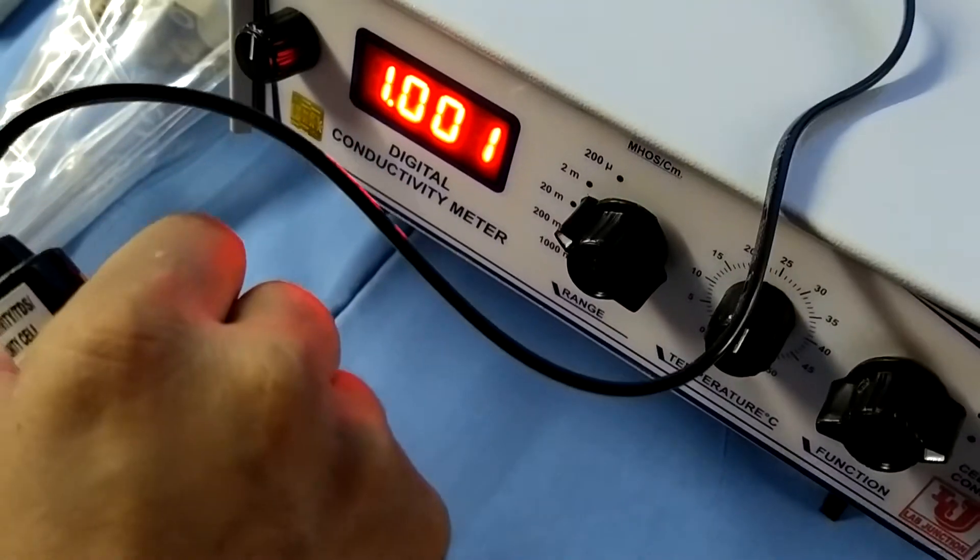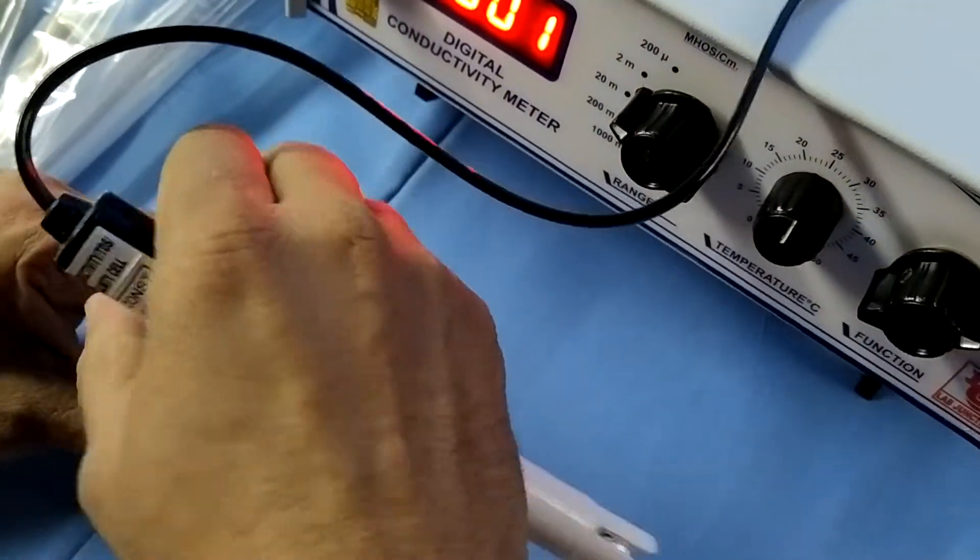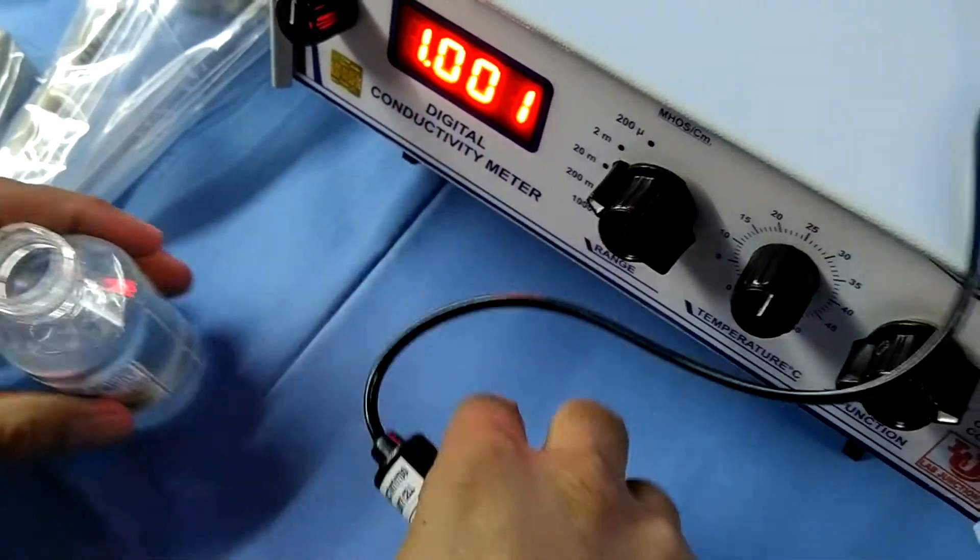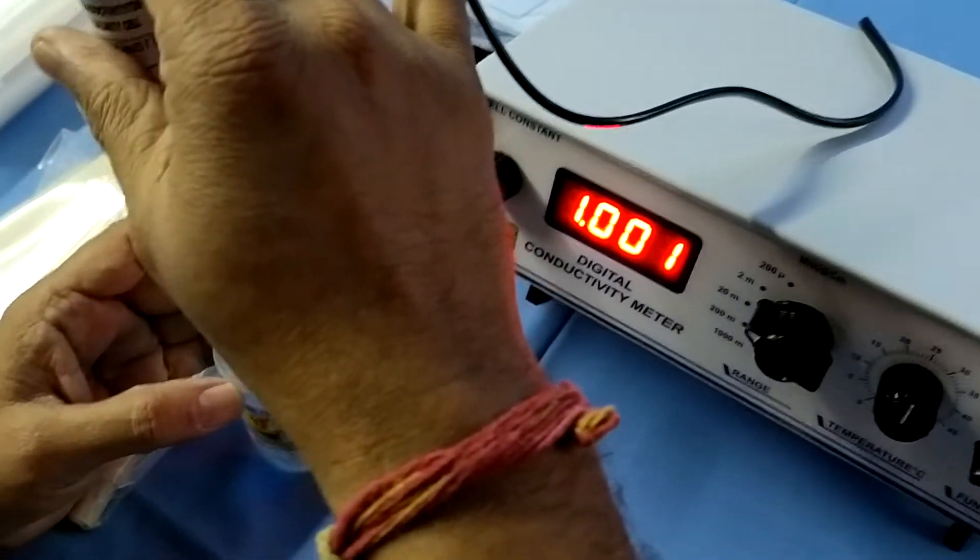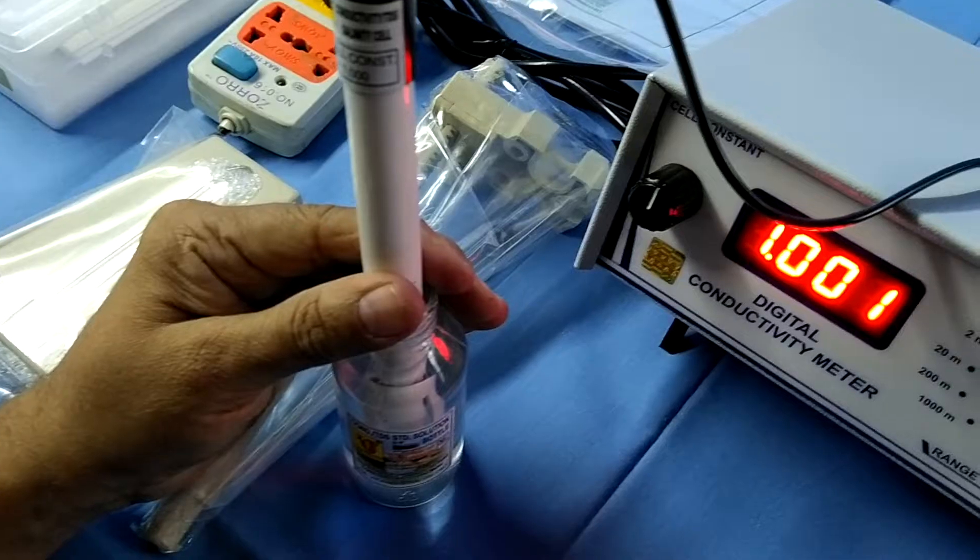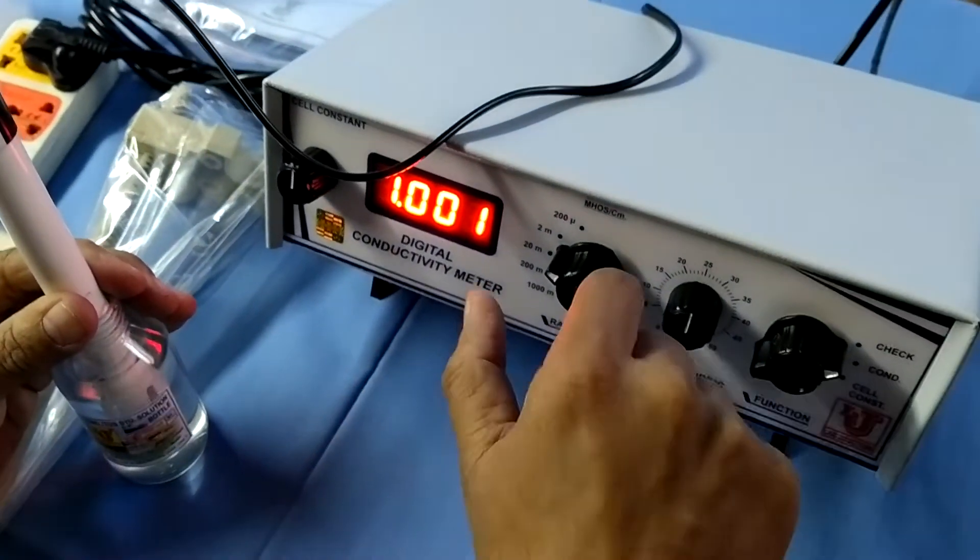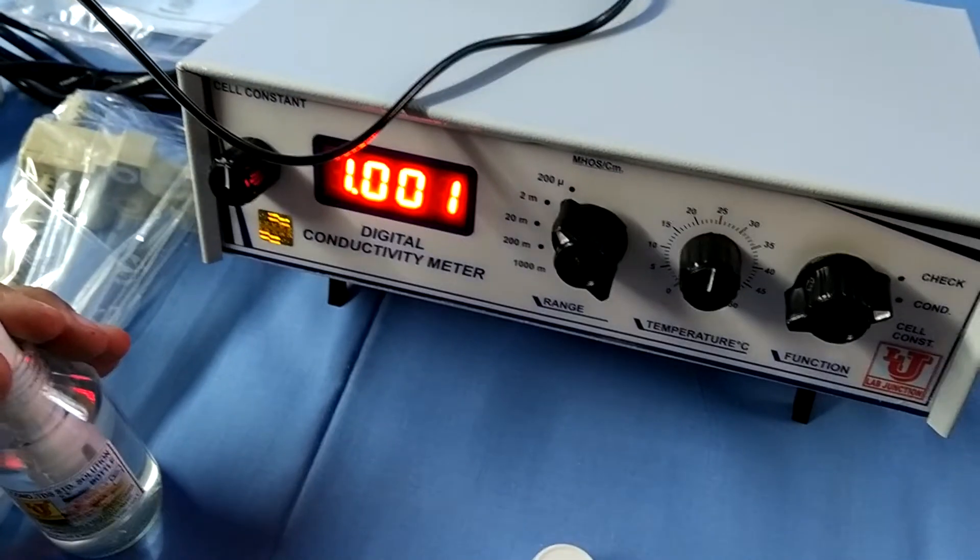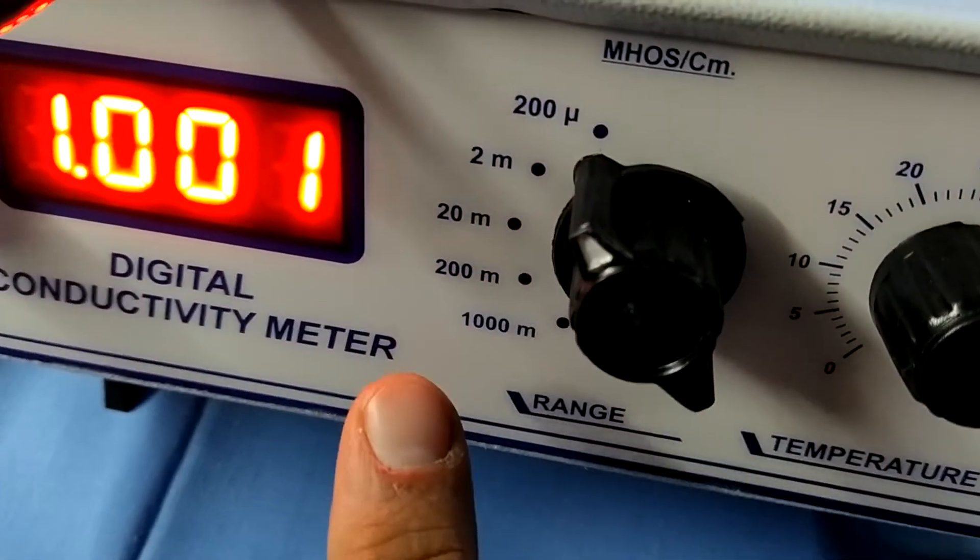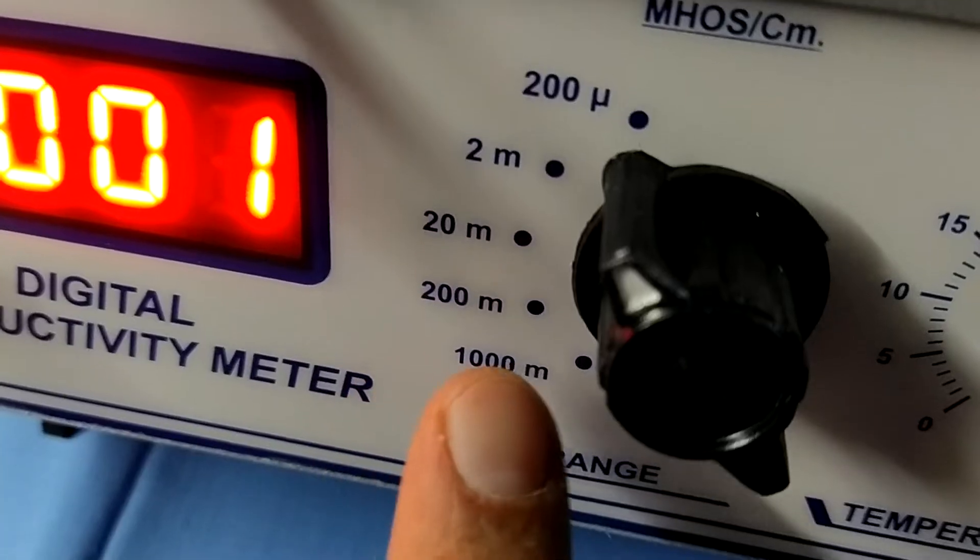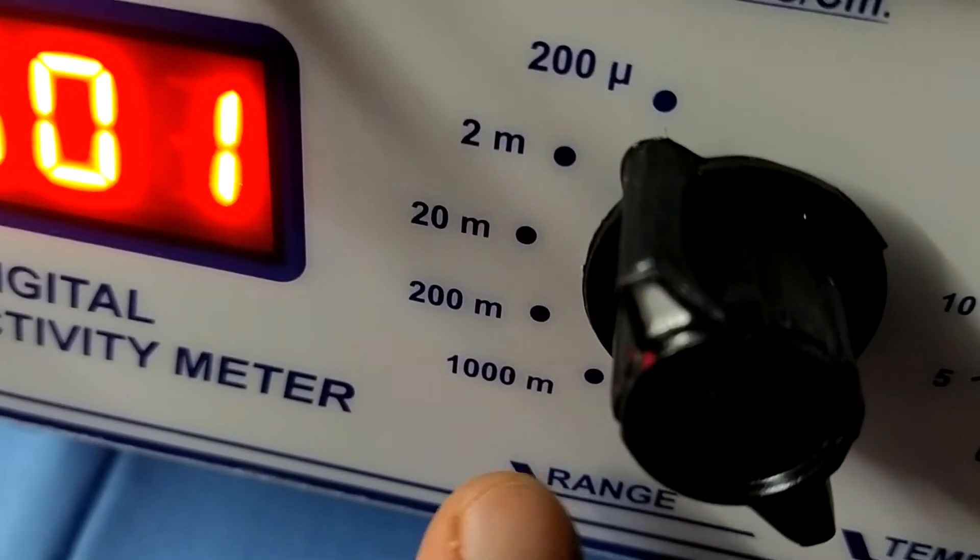This is our conductivity solution. You can dip in there. And you can set first range. 200 microsimons. Second is 2 milli. Third is 20 milli. Fourth is 200 milli. Fifth is 1000 milli.